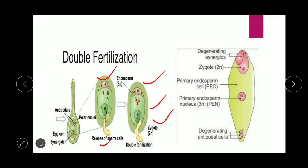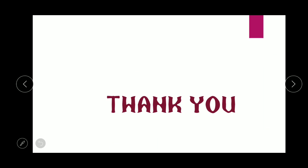The zygote is 2n (diploid) and the endosperm is 3n (triploid). After fertilization, the synergids degenerate after guiding the pollen tube towards the egg and secondary nucleus. The antipodal cells also undergo degeneration. Both synergid and antipodal cell degeneration serve to provide nourishment and reserve food to the developing embryo. The primary endosperm cell (PEC) contains the primary endosperm nucleus (PEN), which is triploid, formed by triple fusion. The zygote is formed by syngamy.